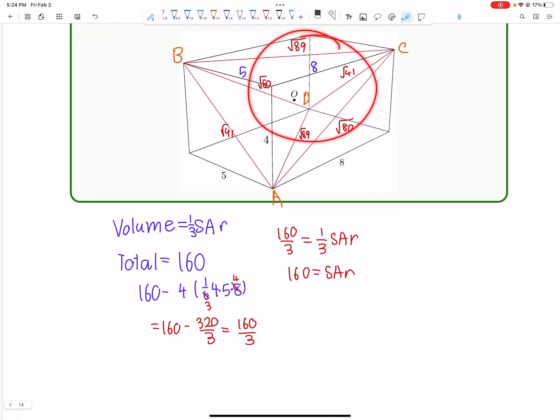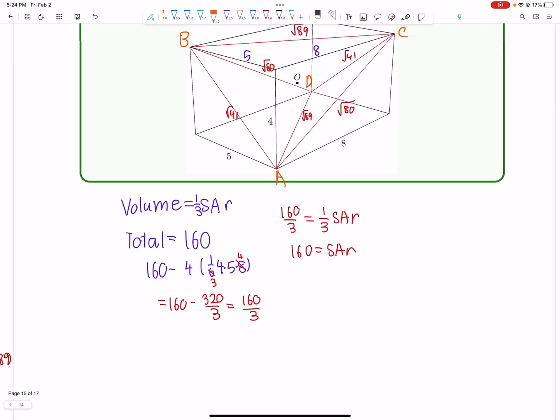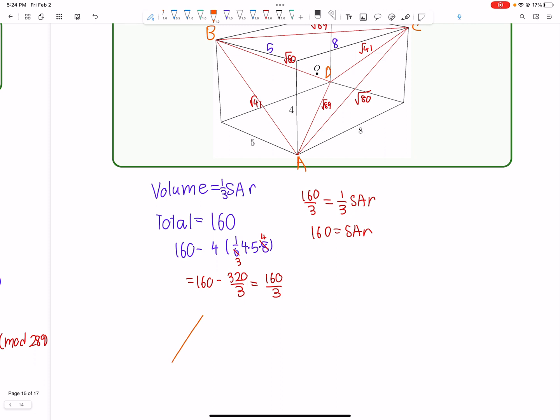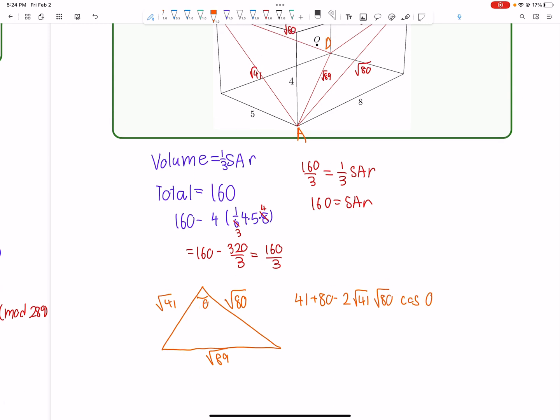So now what you can do is you can use Heron's formula. But using Heron's formula is a bit messy because of these giant square roots. So we use an alternative method, which is basically the same thing. It's just kind of how Heron's derived one way. And we'll just use, first of all, let's draw this triangle separately. We'll use, we'll find, using law of cosines to find the angle and then half AB sine C. This is generally better when we have giant square roots in our terms. So 41 plus 80 minus 2 root 41 root 80 times cosine of, let's just say this angle is theta. Cosine of theta equals 89. So now we have 121 minus 89 equals 2 root 41 root 80 cosine theta.